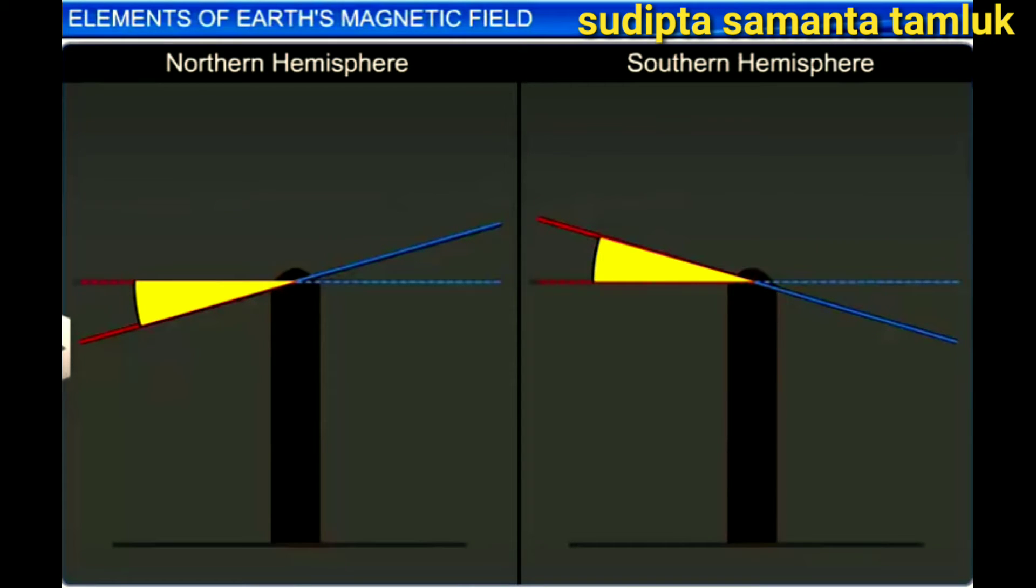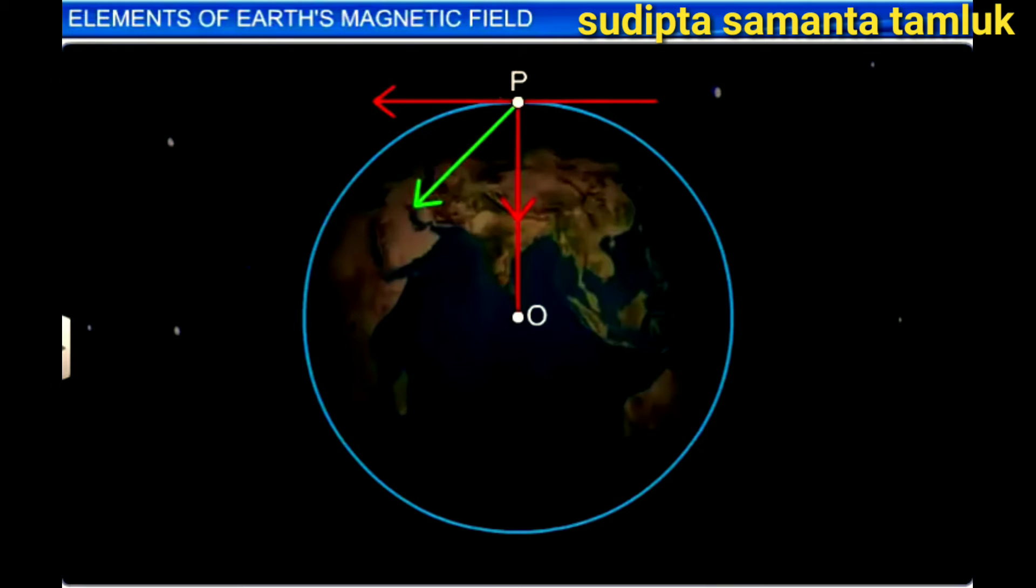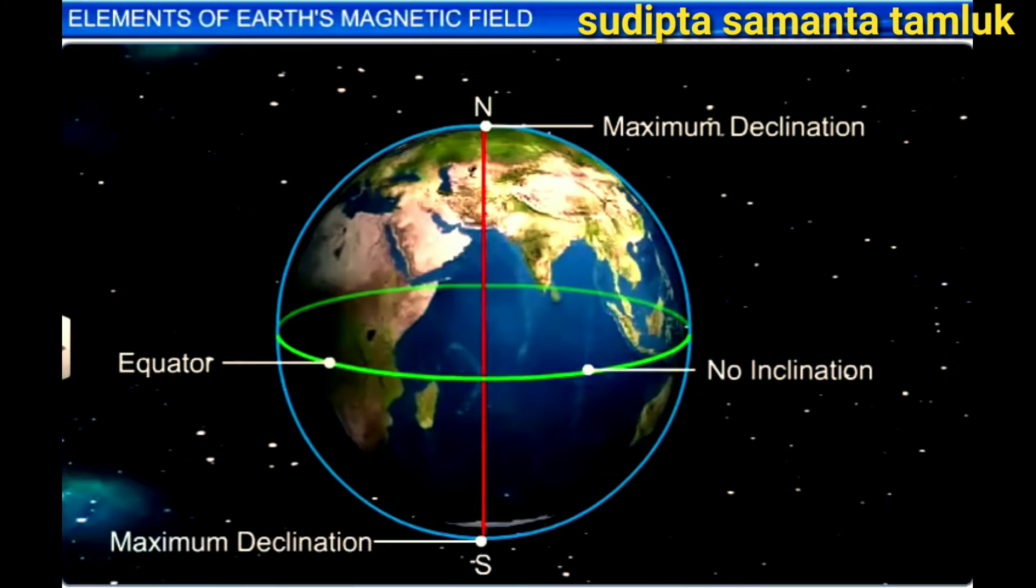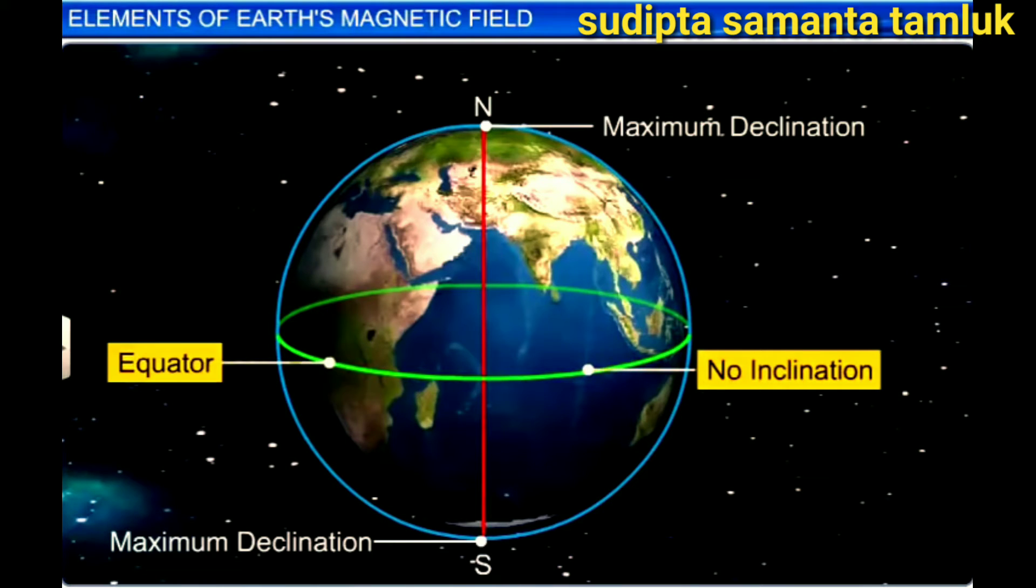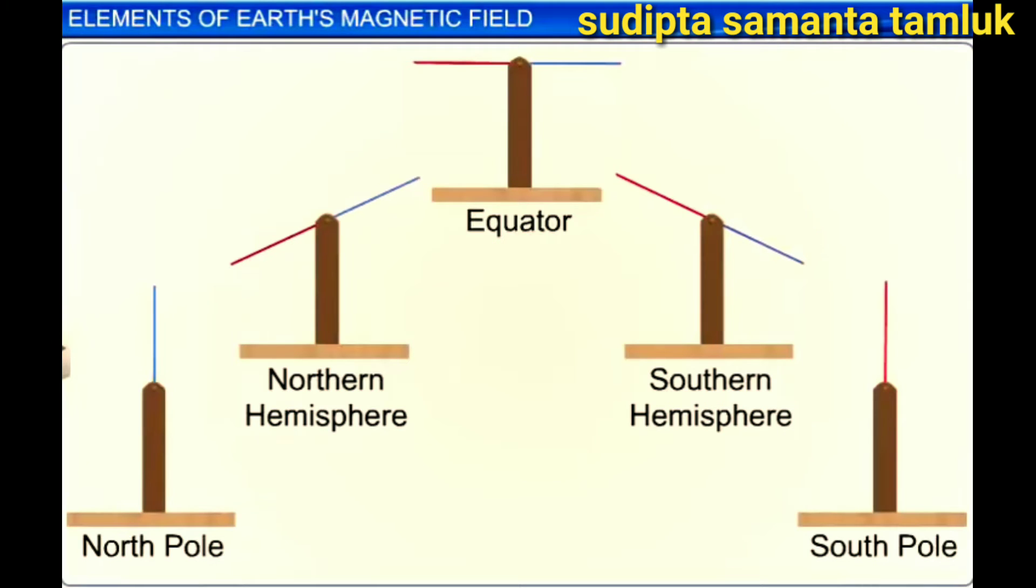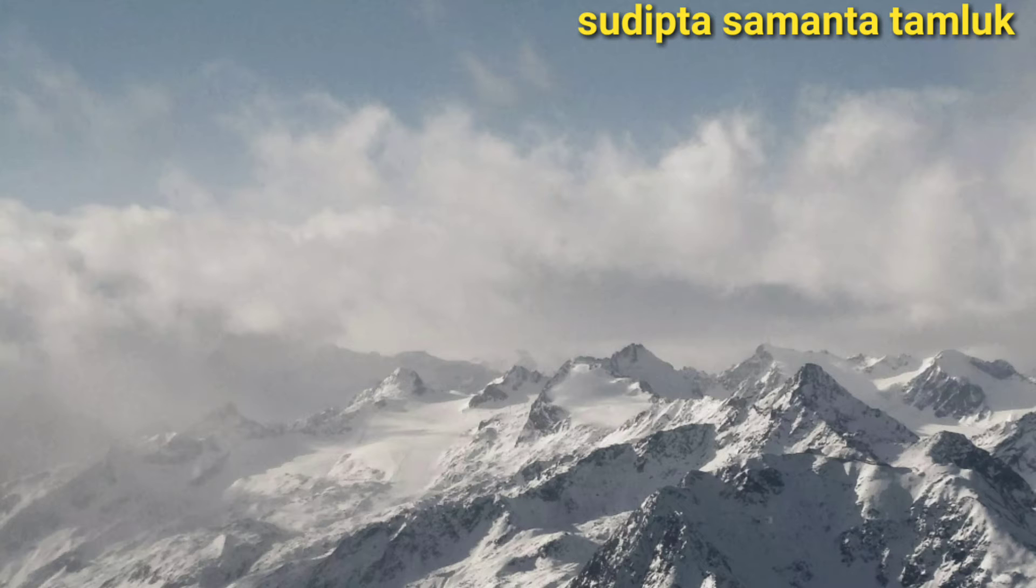The angle through which it dips with respect to the horizontal plane at that point is known as the angle of dip or the inclination. In other words, inclination is the angle that the total magnetic field of the Earth BE makes with the horizontal surface of the Earth at a given point. The inclination is zero at the equator and increases as the latitude increases. If this compass is placed atop the magnetic pole, it will come to rest in the vertical position.